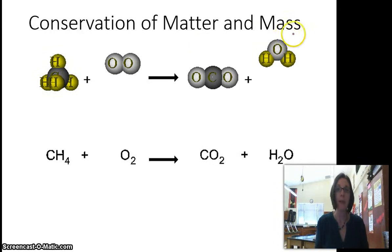We have to conserve matter and mass. So when we look at a chemical equation like this one down here, it's not balanced because we don't have conservation of matter. We don't have the same amount of hydrogen atoms going in as coming out, as we can see in the pictorial diagram.